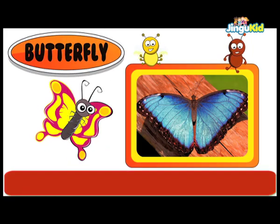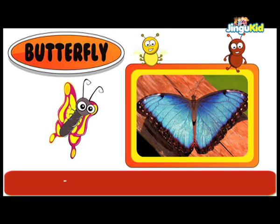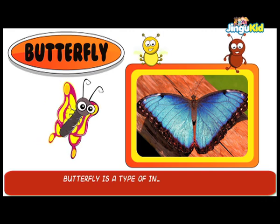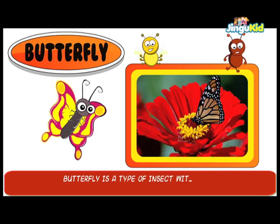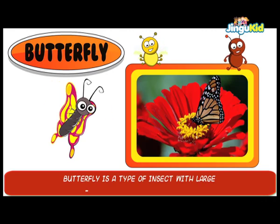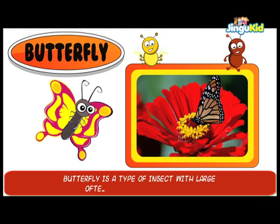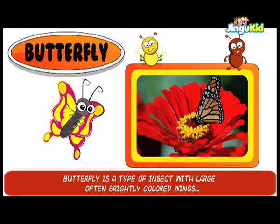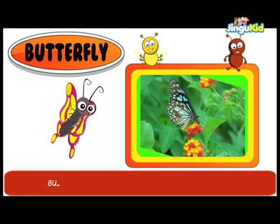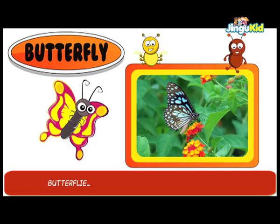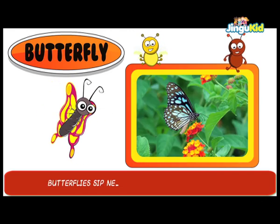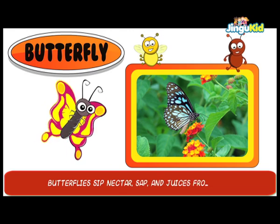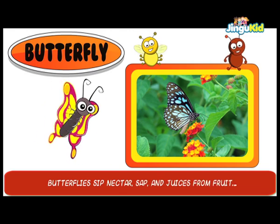Butterfly is a type of insect with large, often brightly colored wings. Butterflies sip nectar, sap, and juices from fruit.